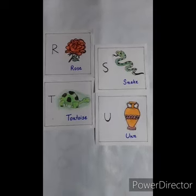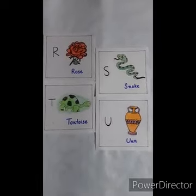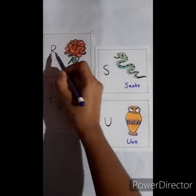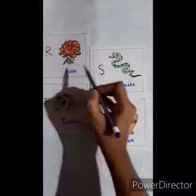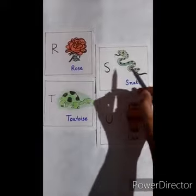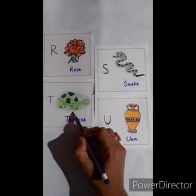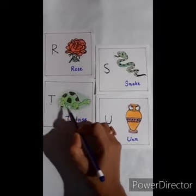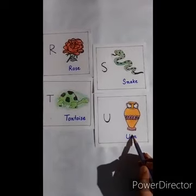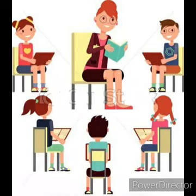Now, let's read and learn some new words. Kids, repeat after me. R for rose, R for rose. S for snake, S for snake. T for tortoise, T for tortoise. U for umbrella, U for umbrella.